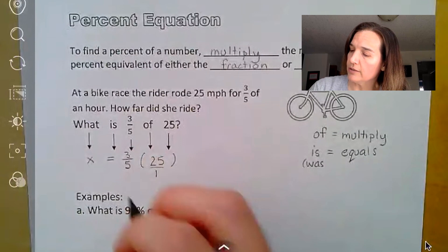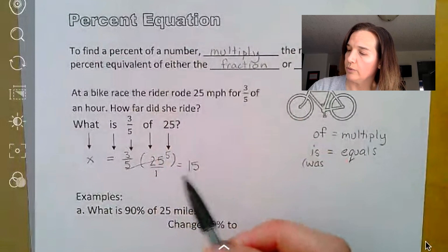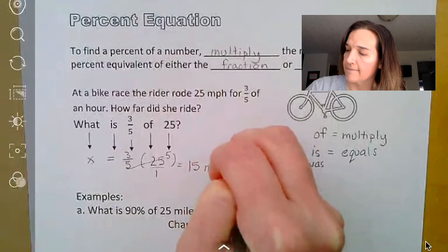I'm going to make this a fraction, and say 25 divided by 5 is 5. And last but not least, I have 3 times 5 is 15. And we were talking about how far she rode, so this would be 15 miles.